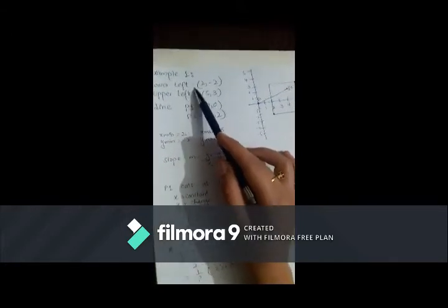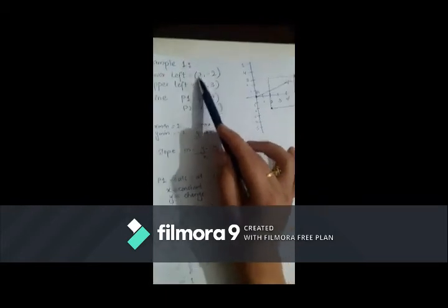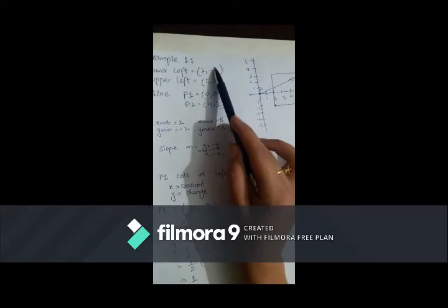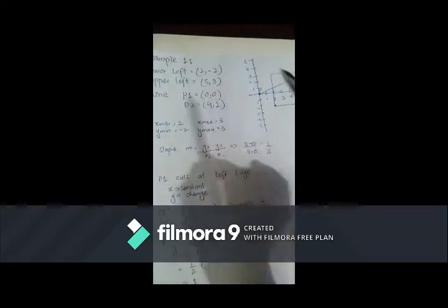What do you need to do? Lower left corner defines 2 and minus 2. 2 represents x-axis and minus 2 represents y-axis. Upper left corner, 5 for x-axis, 3 for y-axis.